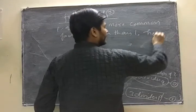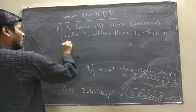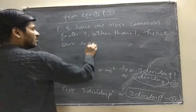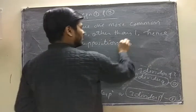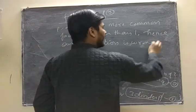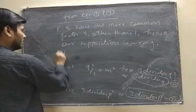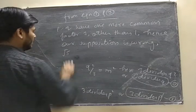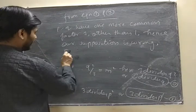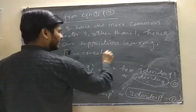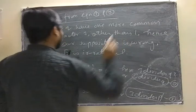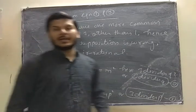Hence our supposition is wrong. Hence √3 is irrational. Hence proved.